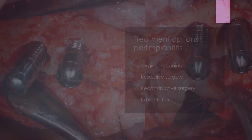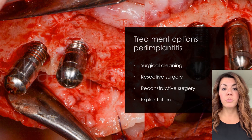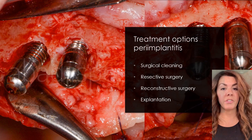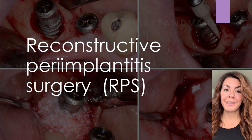The third treatment option is reconstructive surgery. When you do a reconstructive surgery, you use different types of biomaterials or autogenous bone in combination with membranes to try to augment the area and have bone fill in the crater defect surrounding the implant. The last treatment option is explantation, which is done when the peri-implant situation is untreatable because of severe bone loss, or when the affected implant can be removed without affecting the prosthetic construction.